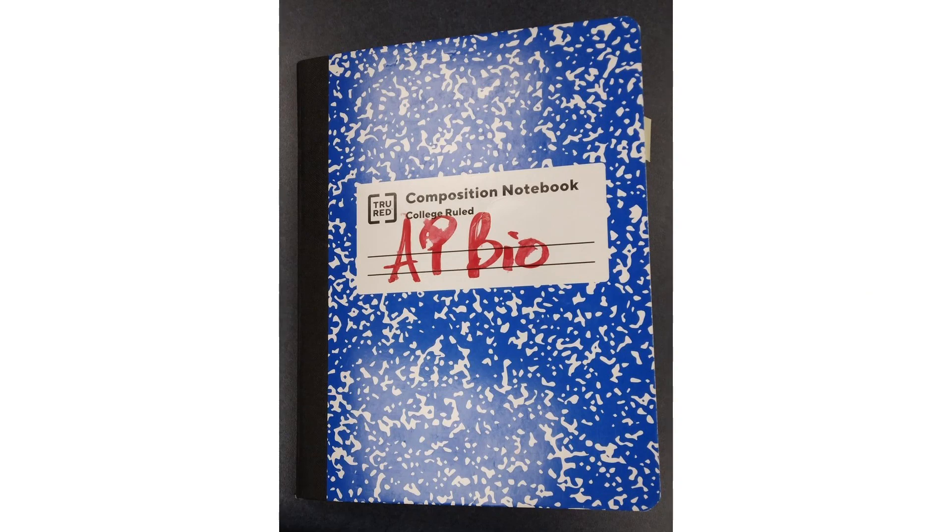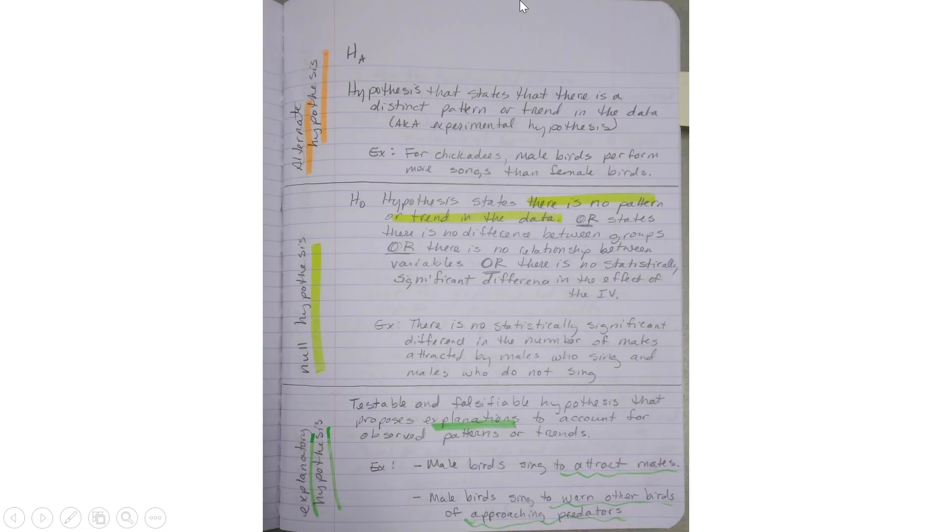All right, so this information is going to go into your AP Bio Comp book, the Bound Composition Notebook. First page I have, and this is a right-hand side page, I've divided into three sections.